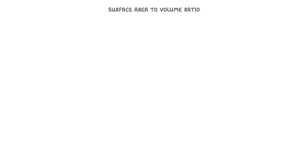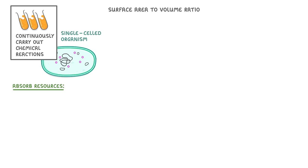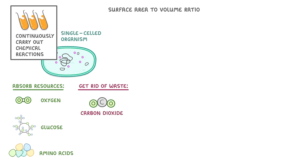To start, let's imagine a single-celled organism. In order to survive, this cell has to continuously carry out loads of chemical reactions, building up and breaking down molecules. To do this, it needs to absorb resources like oxygen, glucose, and amino acids from its surroundings, and then it also needs to get rid of any waste products that it produces, like carbon dioxide.